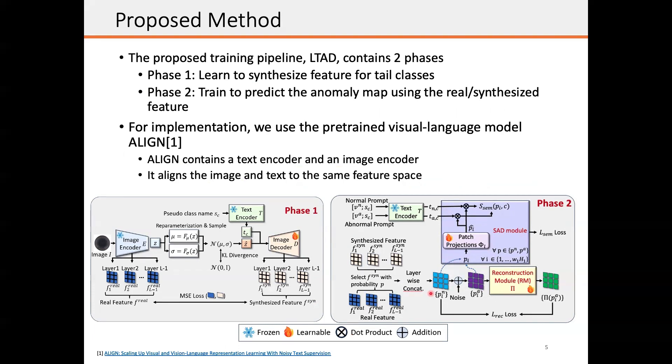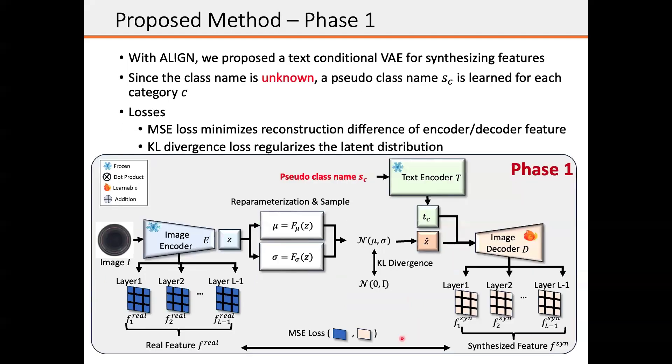For implementation, we use a pre-trained visual language model, ALIGN, which aligns the image and text to the same feature space. With ALIGN, we propose a text conditional variational autoencoder, or VAE architecture, for synthesizing the feature in phase one. Given an image, the fixed image encoder from ALIGN first extracts the feature. A trainable image decoder is learned to synthesize the feature in a VAE style.